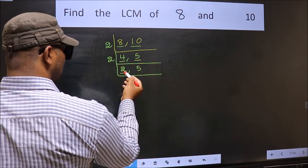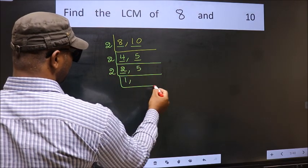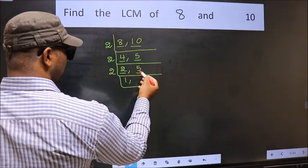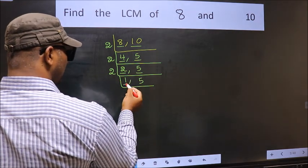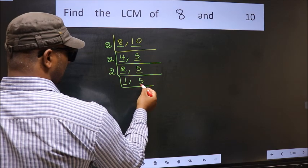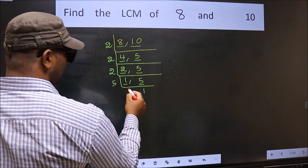Now, here we have 2. 2 is a prime number so 2 times 1 is 2. The other number 5 is not divisible by 2 so we write it down. We got 1 here so focus on the other number 5. 5 is a prime number so 5 times 1 is 5.